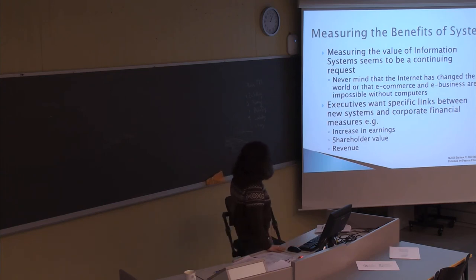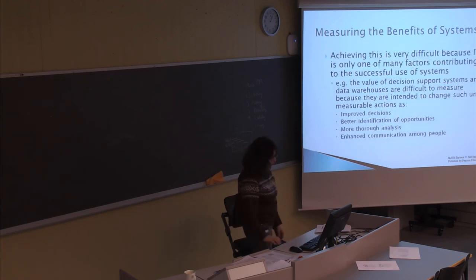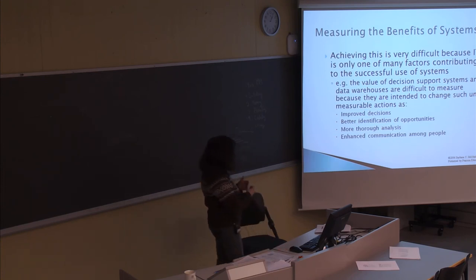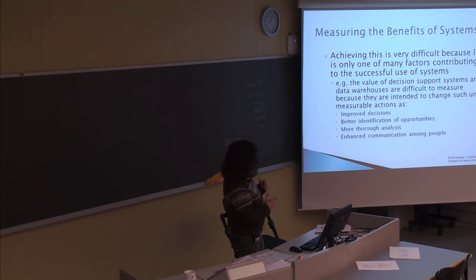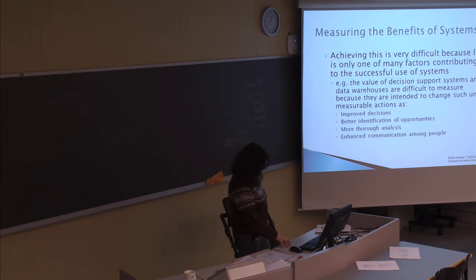You need to be able to look at the benefits of the information system. Sometimes it's hard to measure this. You can measure it in financial terms like increased earnings, shareholder value, or revenue. But more likely, companies also try to look at other kinds of indirect values — for example, being able to make decisions better, identify opportunities, or enhance communication with customers. These are also values or benefits of a new system.